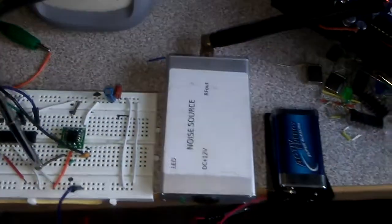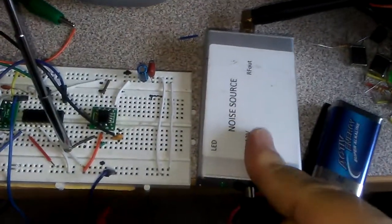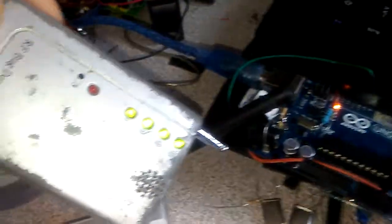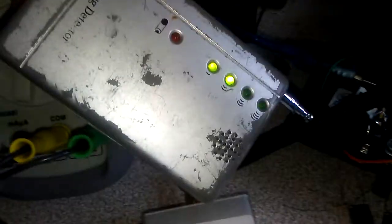You can see when the light is on, it means the noise source is working pretty well. The bug detector will detect exactly this noise generator unit.